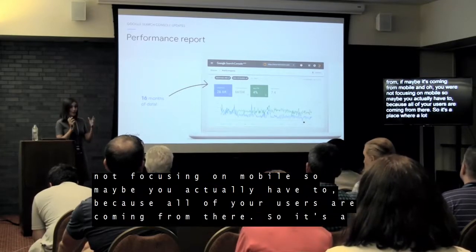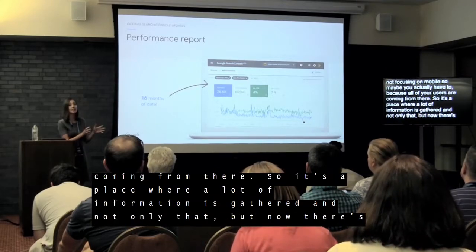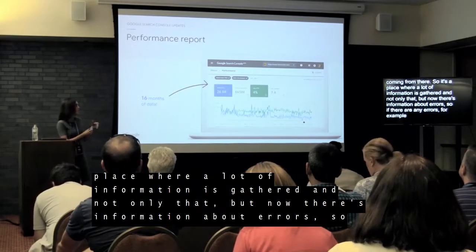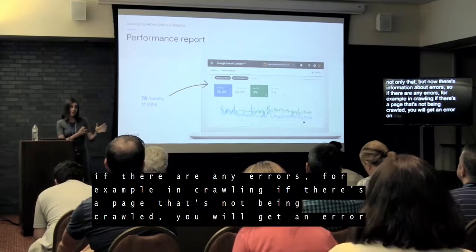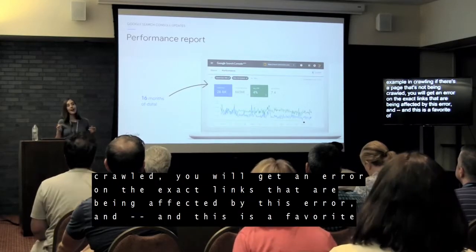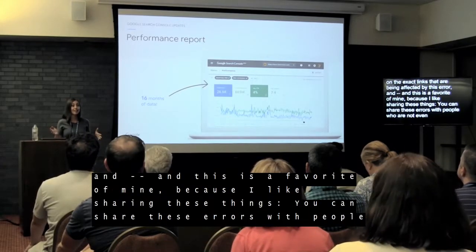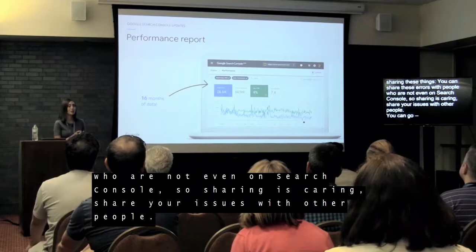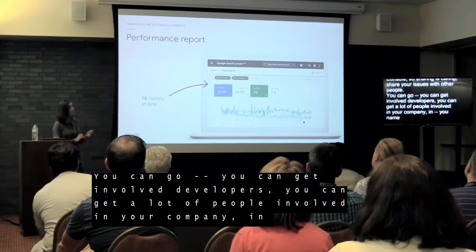The report also highlights errors — for example, if a page isn't being crawled, you'll get an error with the exact links affected. A feature I particularly like: you can share these errors with people who don't even have Search Console access. So you can get developers and other team members involved. It's a very useful collaborative tool.